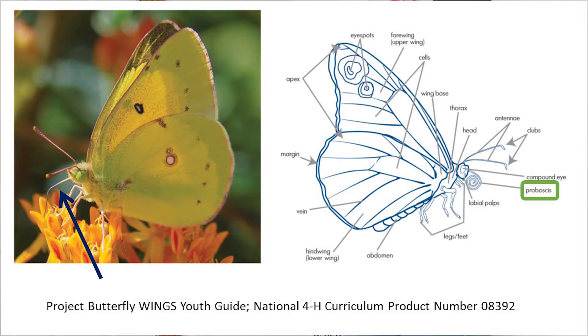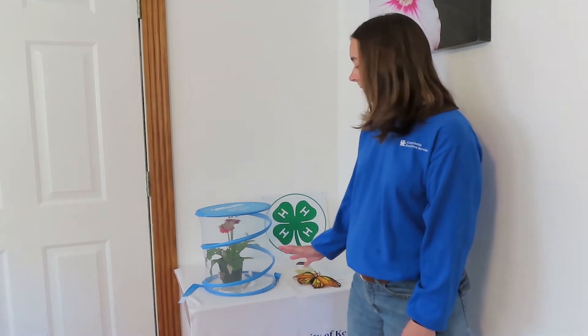Our butterflies will reach reproductive maturity in five to seven days and can begin laying eggs at that time. They will only live about 10 to 14 days but can lay up to 500 eggs in their lifetime. They will lay their eggs on the leaves of the plant, so we've got our plant in there so we can watch and see if we find any eggs.